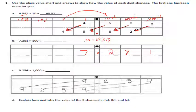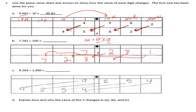One hundred is equal to ten times ten, so each digit will move two place values. The seven moves two place values, the two moves two place values, the eight moves two place values, and the one moves two place values. We put our decimal point in.